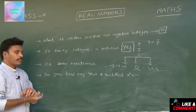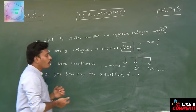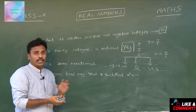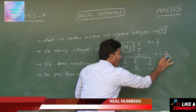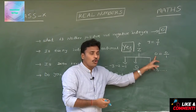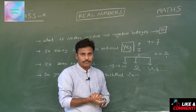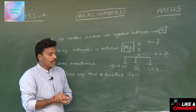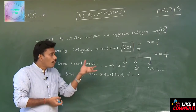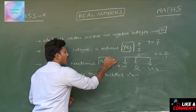For the third question — is 0 irrational? We can express 0 as 0 by 1, or 0 by 2, or 0 by any non-zero number. This satisfies the form of a rational number, so 0 is a rational number. Since 0 satisfies the rational form, we consider 0 in the collection of rational numbers. The answer is no — 0 is not irrational.